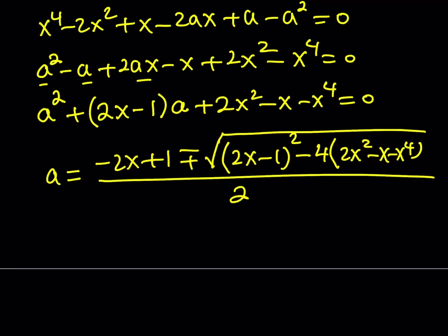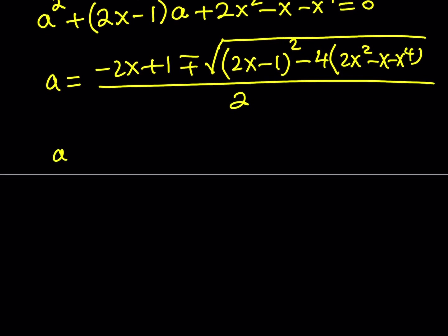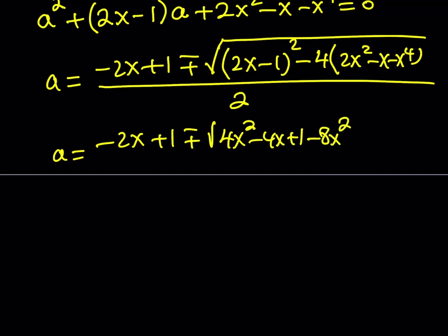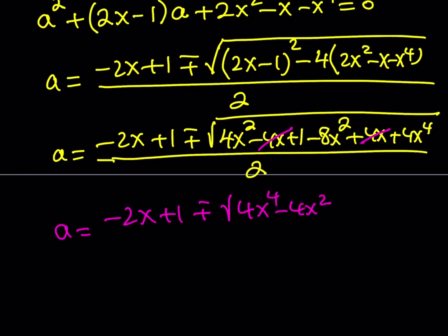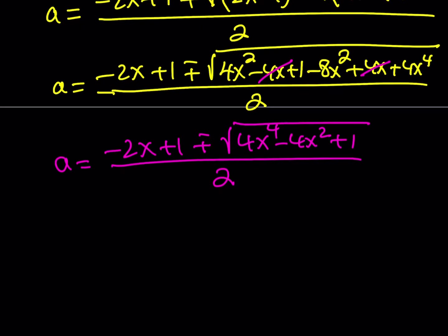Expanding and simplifying: the numerator becomes negative 2x plus 1, plus or minus the square root of 4x squared minus 4x plus 1, minus 8x squared plus 4x plus 4x to the fourth. The negative 4x and positive 4x cancel, leaving 4x to the fourth minus 4x squared plus 1 inside the radical. This is a perfect square — it equals (2x squared minus 1) squared.